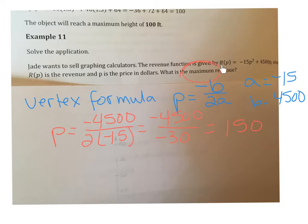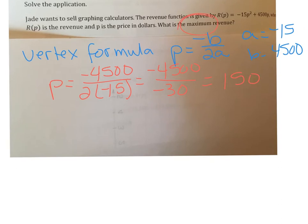So in order to find the maximum revenue, we need to substitute this p into the function and simplify to solve for revenue. So I'm going to rewrite the function. The function is R(p) = -15p² + 4500p. And then I'm going to take my p, my maximum price, and I'm going to put it in here. And when I simplify all this, then I will have the maximum revenue.